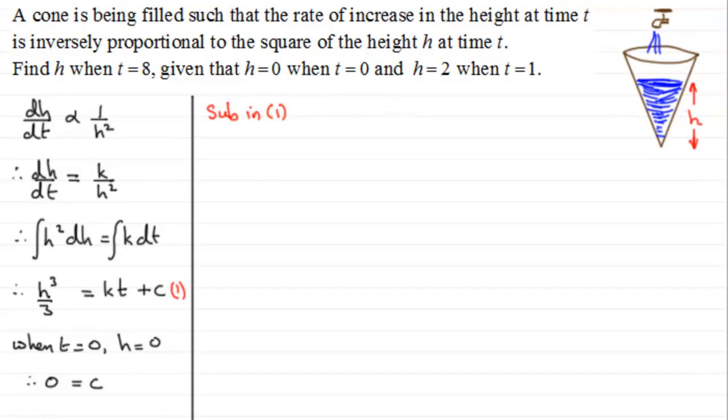Sub in one and that gives us now that h cubed over 3 equals kt. So therefore h cubed over 3 equals kt.